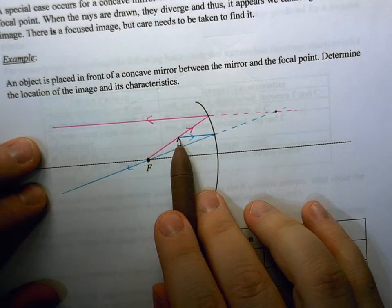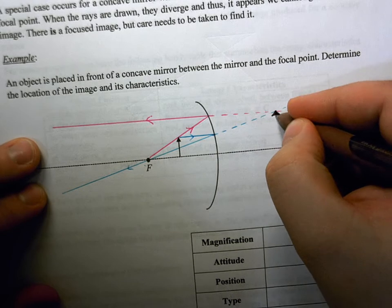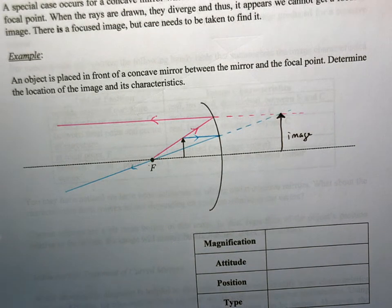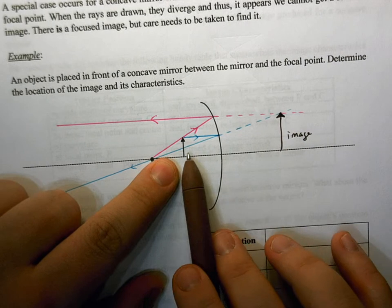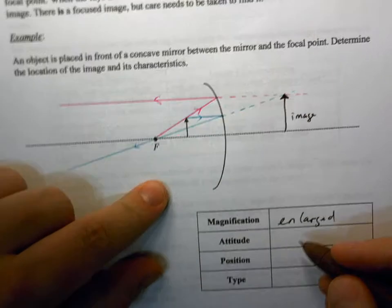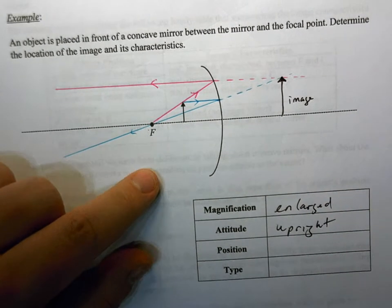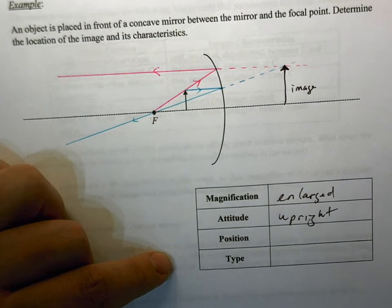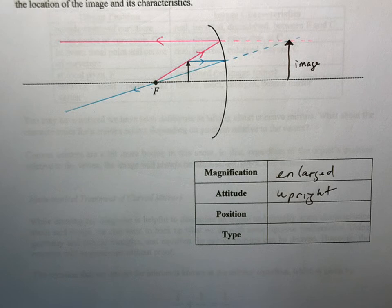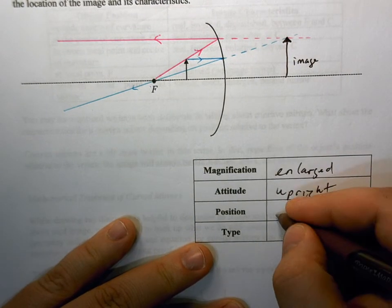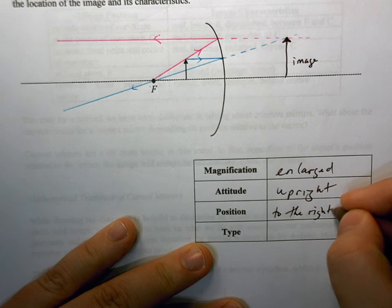So if we extend those real reflected rays back into the kind of the virtual area, we do notice an intersection at this point. So this is going to be the tip of our arrow. So we're going to draw the tip of our arrow and then we can fill in the arrow. So this is going to be the image here, and that's a really tricky one. So we got to be really careful with that. So our image, it is certainly bigger than our object, so we can say that this is enlarged. Its attitude, they're both pointing up, so we can say that this is upright. Position, we're just going to say it's to the right of the mirror.